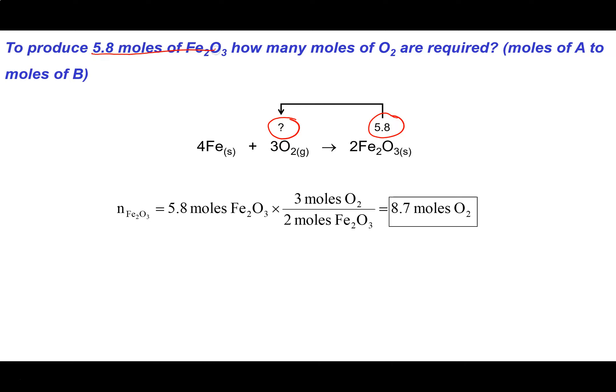So here we go. Here's one going from a product back to the reactants. So it says if I want to make 5.8 moles of Fe2O3, how many moles of O2 are required? Pretty simple. Number of moles of O2. Sorry, that should say O2, shouldn't it? There we go.